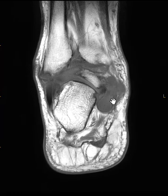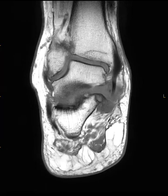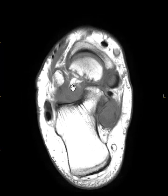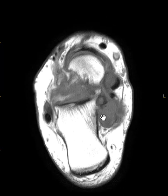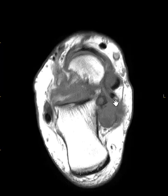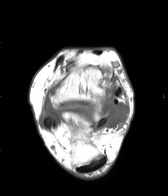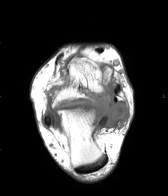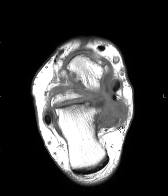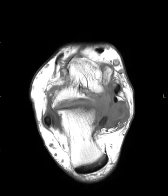Let's look at an axial view. Getting our bearings: here's the sinus tarsi, and here's this big process over here in the region of the tarsal tunnel. The vessels are over here and the tibial nerve is over here — these little dots represent the neurovascular structures of the tarsal tunnel. So this process goes backward between the flexor digitorum and flexor hallucis, fills the tarsal tunnel, and pushes on these neurovascular structures.